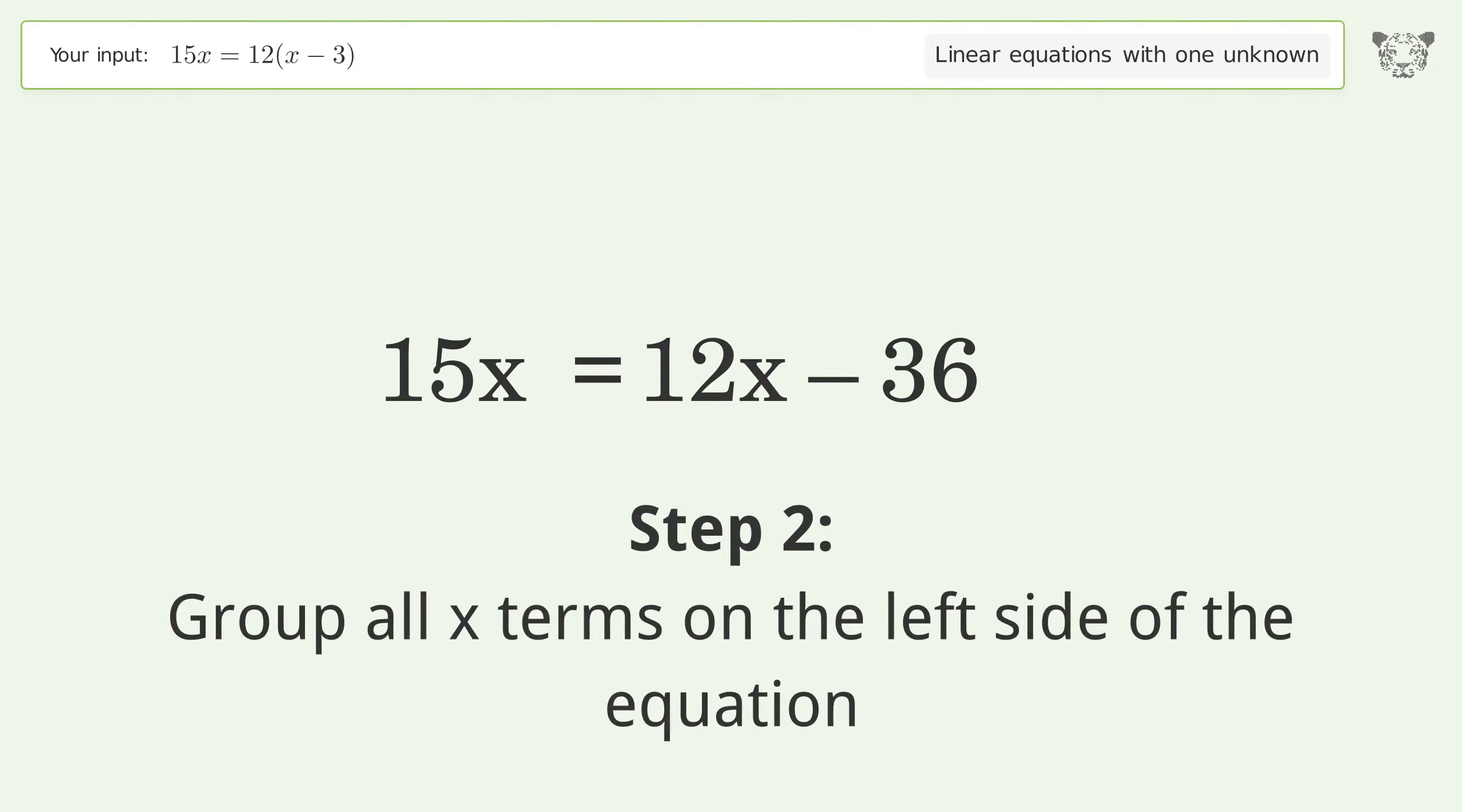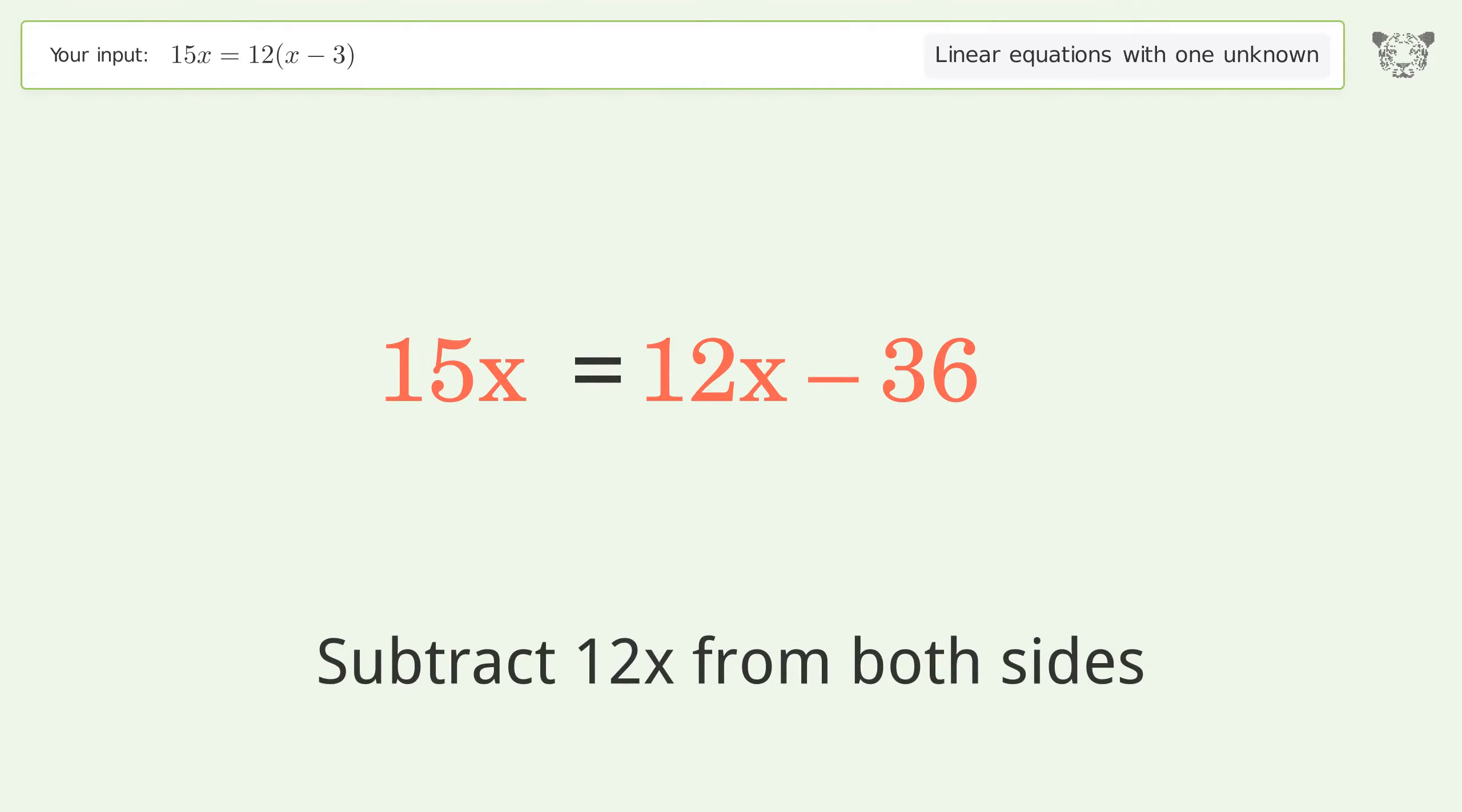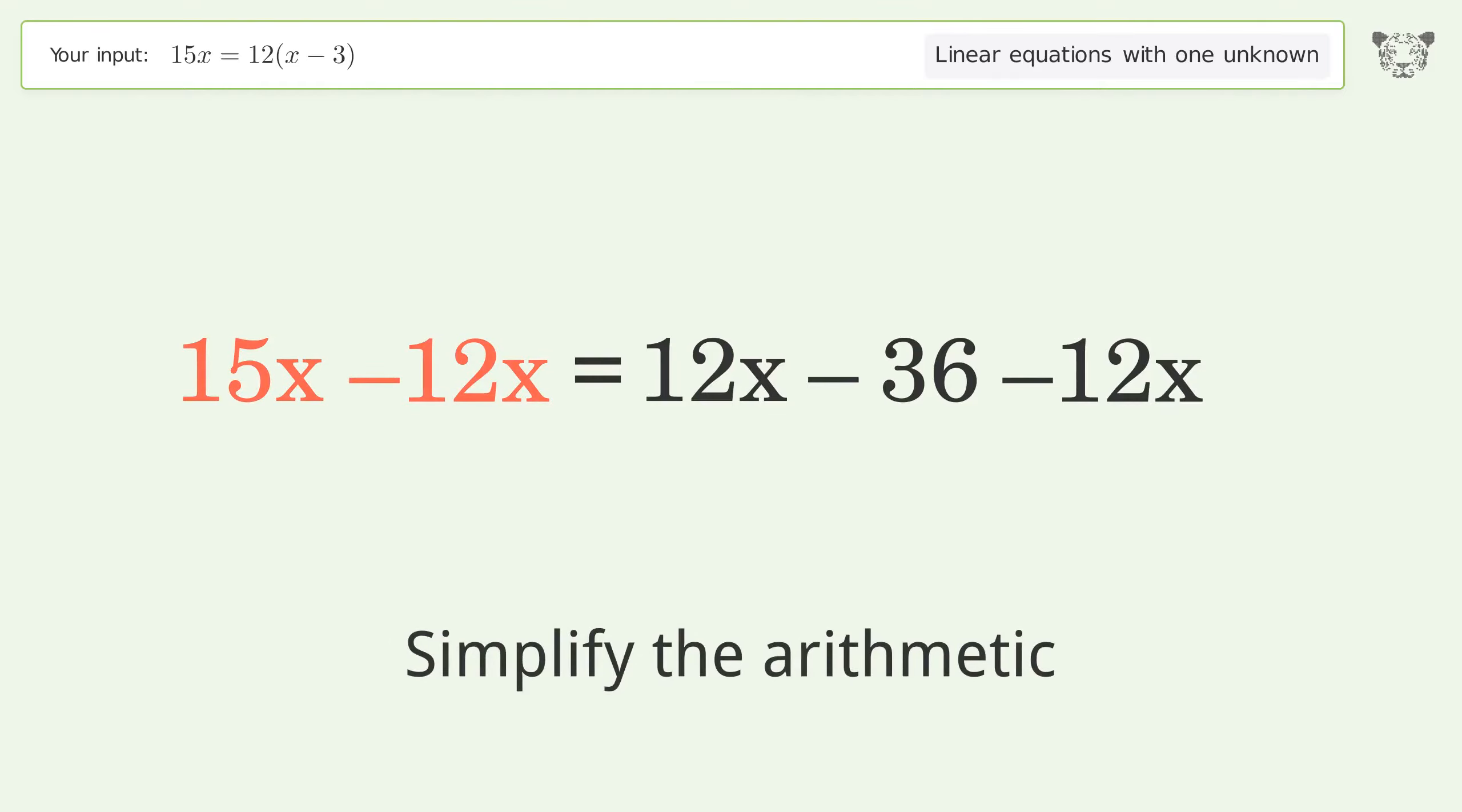Group all x terms on the left side of the equation. Subtract 12x from both sides. Simplify the arithmetic.